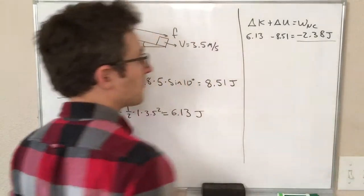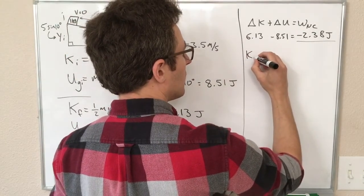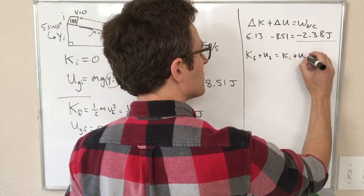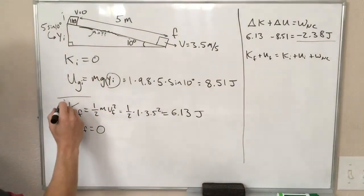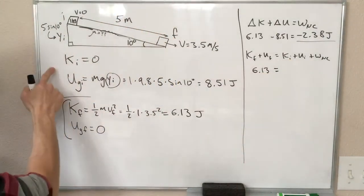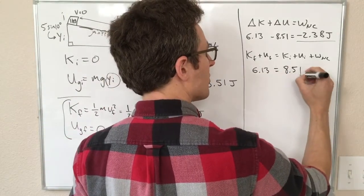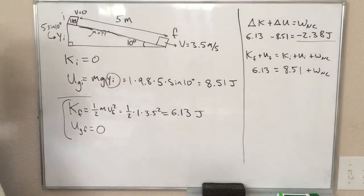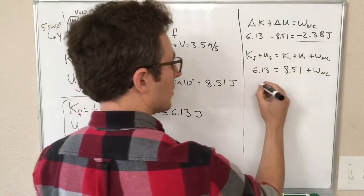And that's it, this is the answer to the problem. Let's also look at it with our other equations, that was K final plus U final equals K initial plus U initial plus the non-conservative work. So here, K final plus U final, that's the total energy at the end. This is 6.13 joules, and K initial plus U initial, the total energy at the beginning, was 0 plus 8.51, 8.51 joules, plus our work done by non-conservative forces. So we subtract 8.51 from both sides, and we get exactly this same equation from above.